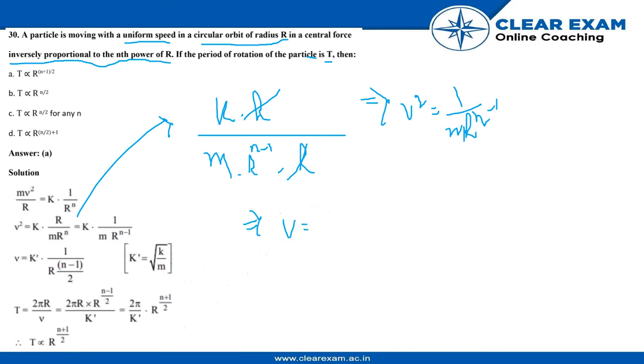v is square root of k upon m and r to the n minus 1. And we also know that k dash is k by m.